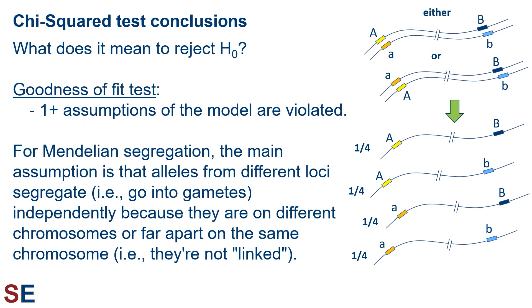Let's look at that last part in more detail. What does it mean to reject the null hypothesis in a test like this? When we do a goodness-of-fit chi-squared test, if we decide to reject the null hypothesis, that means that one or more of the assumptions in our mathematical model are violated. For Mendelian segregation, the main assumption is that alleles from different loci segregate — that is, go into gametes during meiosis — independently because they're on different chromosomes or very far apart on the same chromosome.